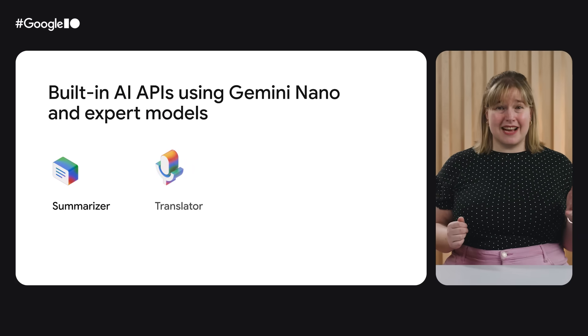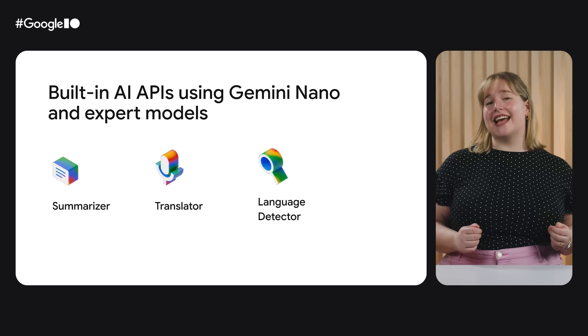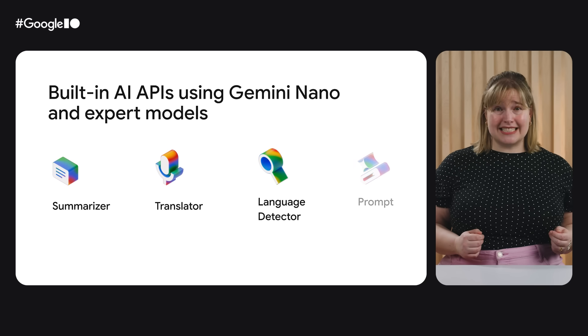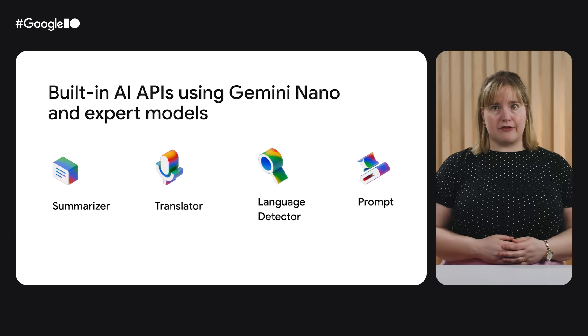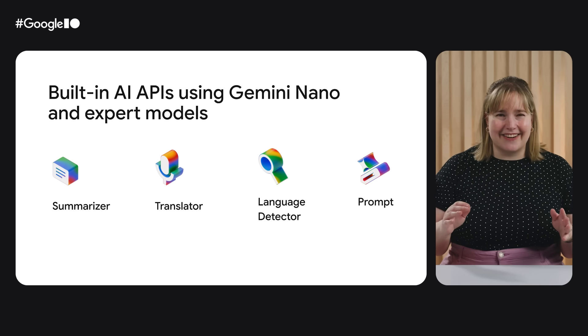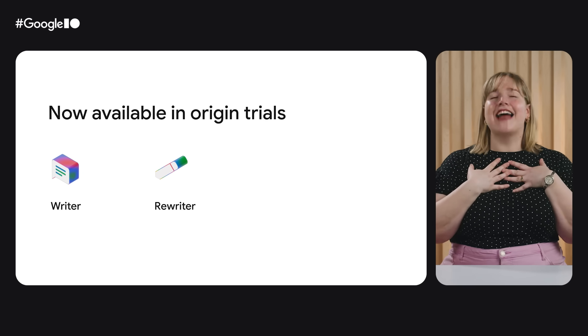Last year, we announced built-in AI APIs, which help you perform specific tasks using client-side inference. These APIs give you our leading models, including Gemini Nano, performing AI right in the browser. Today, the Summarizer, Translator, and Language Detector APIs are available in Chrome Stable for your web apps and extensions. And in Chrome extensions, the Prompt API is stable too. My favorite ones are the Writer and Rewriter APIs, and they're now in origin trials.